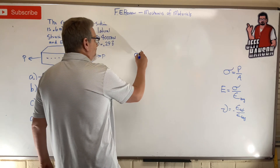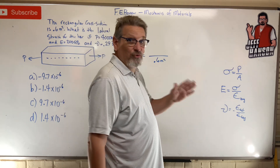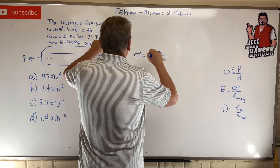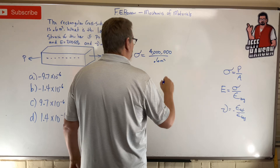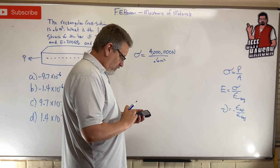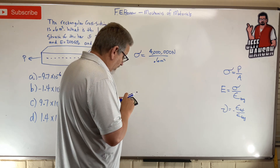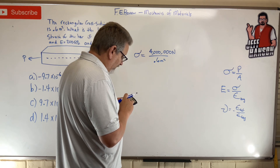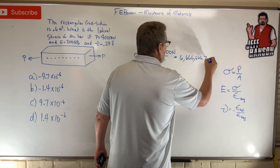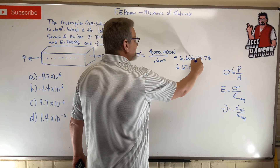Sigma equals P over A. Area is given as 0.6 meters squared. I want P in newtons, so 4,000 kilonewtons becomes 4,000,000 newtons — put three more zeros on it. Now I get pascals. 4,000,000 divided by 0.6 equals 6,666,666.7 pascals, or 6.67 megapascals.